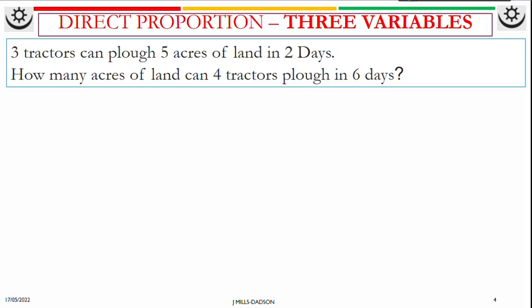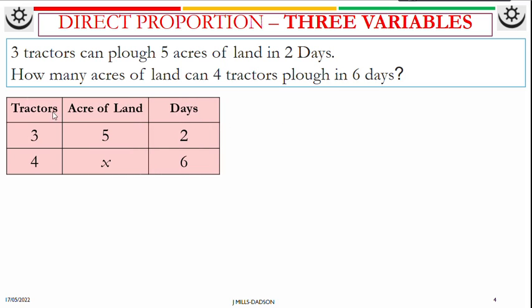So we have tractors, acres of land, and days. Put it into a table form. Three, five, two. Simple. Four is for tractors, put it under tractors. Six is for days, put it under days. You don't know the acres of land, so you call it x.